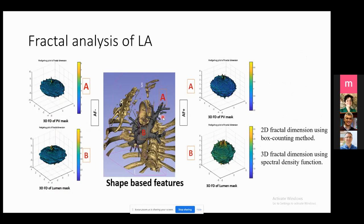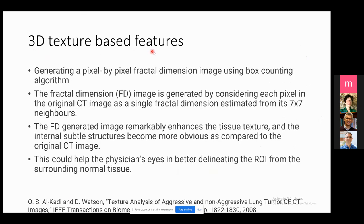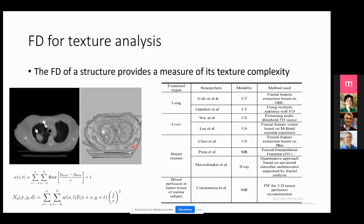We can also extract 3D texture-based features, not from the binary mask but directly from the CT or MRI scan. We can generate fractal dimension pixel by pixel using box counting, considering some neighborhood for each pixel. We set the window parameter based on our application and extract the fractal feature for each ROI — this represents the fractal dimension for each pixel of the CT scan.